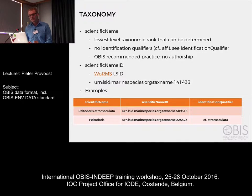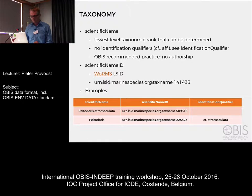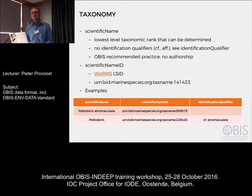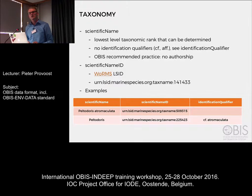Scientific name should contain the lowest rank at which you can identify an organism. If you're sure about the genus identification, put the genus in there. If you have affinis or confer, you can add it in the identification qualifier field. Within OBIS we recommend not including the authorship in scientific name — just the species name. For scientific name ID, we recommend using LSIDs from the World Register of Marine Species. These are URNs using the ID from the WoRMS database.